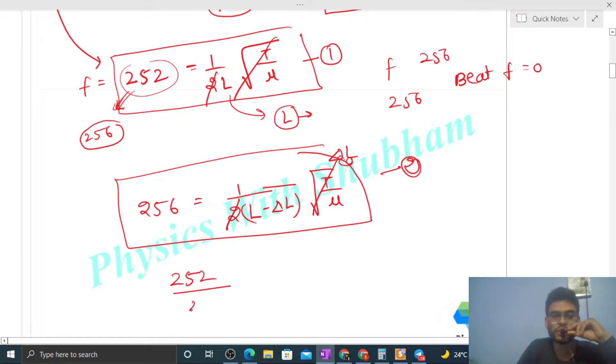So 252 divided by 256 equals - now see, this 1/L will go to the denominator and this L minus delta L will come to the numerator - L minus delta L.